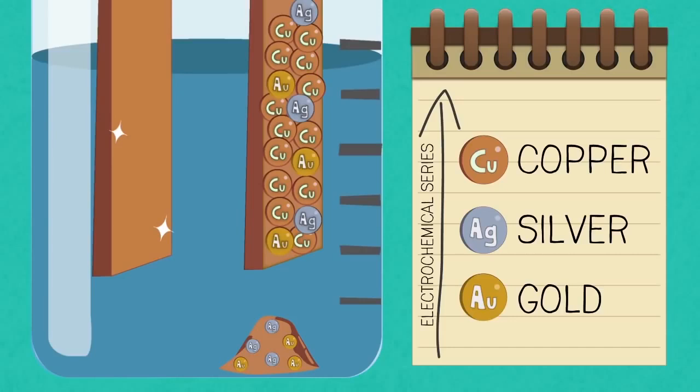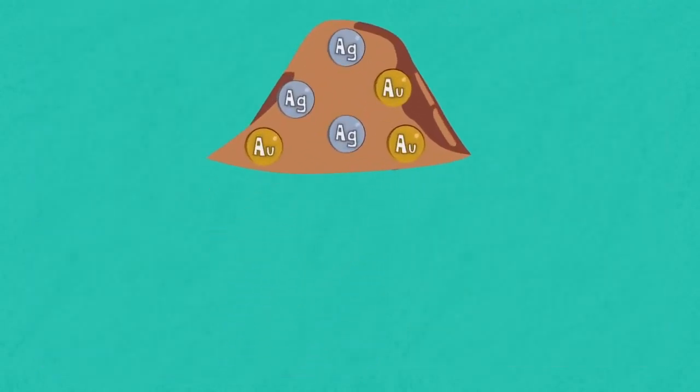Now the anode sludge may contain valuable metals such as silver and gold.